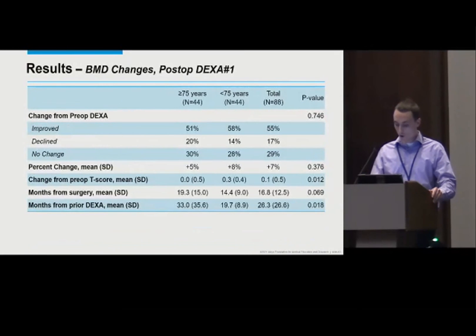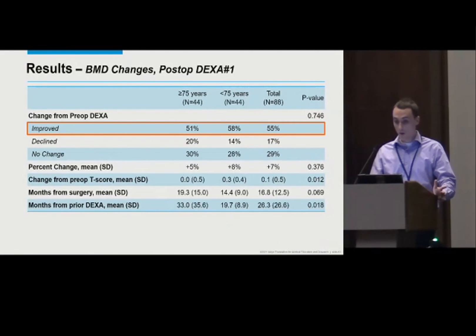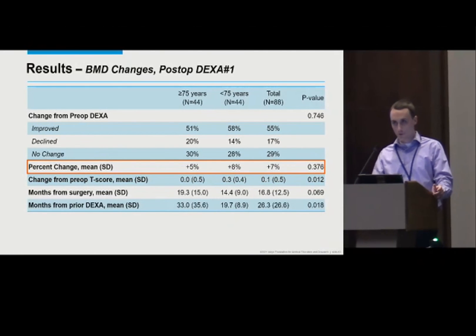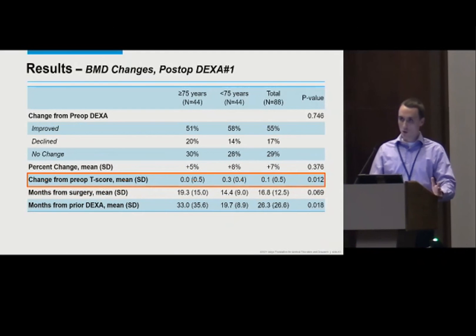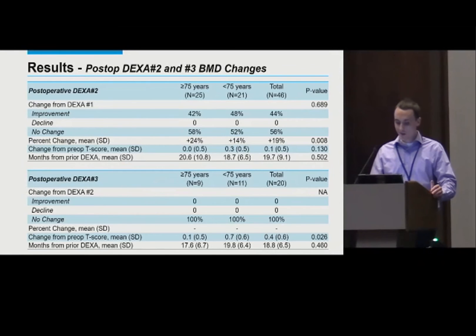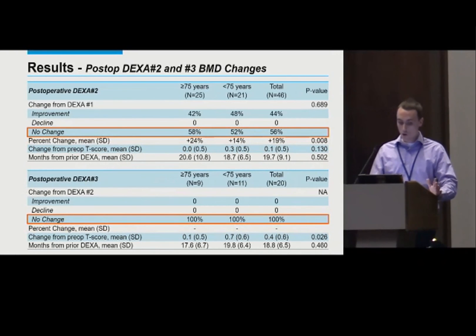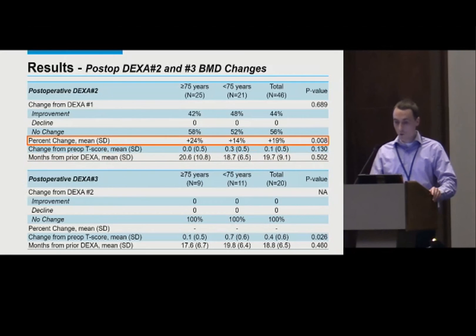Postoperative outcomes were comparable between age groups. Overall complication rate was 5% in the 75 and older group and 7% in the younger group — no significant difference. Major complications were very low, with permanent hypocalcemia of less than 1% and no recurrent laryngeal nerve injuries. The 75 and older group experienced significantly higher postoperative fracture rates of 15.1% compared to 2.9%. Persistent and recurrent disease was similar between groups, with 3% persistence and 8% recurrence overall. At the first postoperative DEXA scan, a majority of patients had bone mineral density improvements — 55% overall, with a 5% improvement in the elderly group and 8% in the younger group, which was not statistically significant between groups.